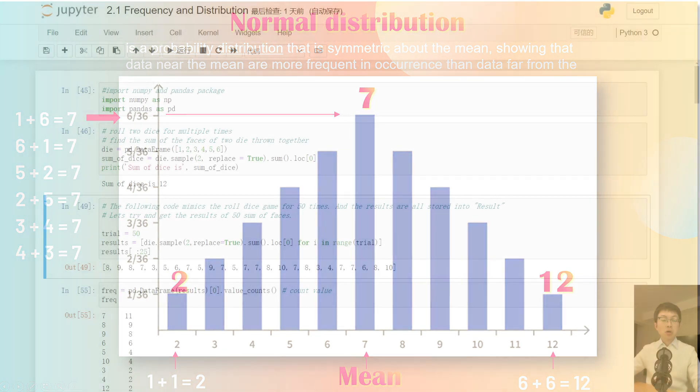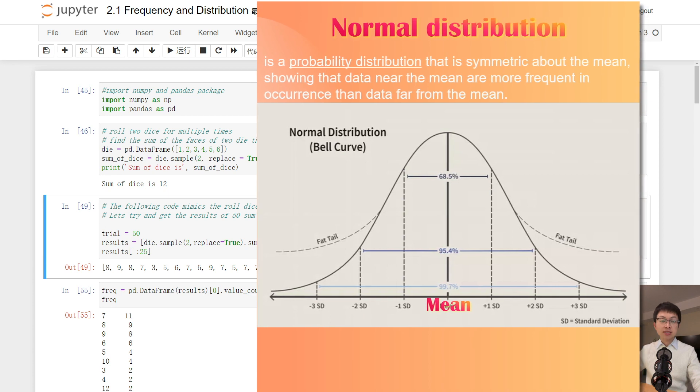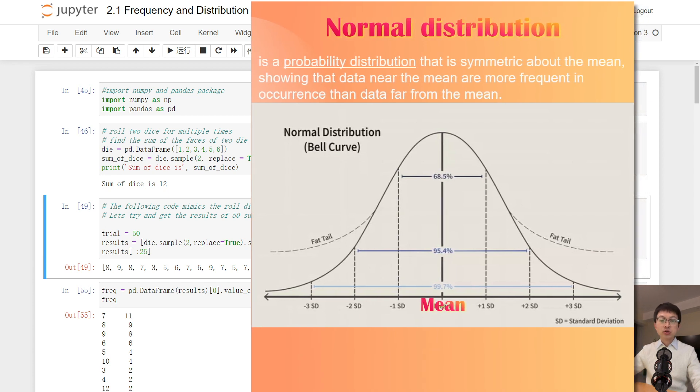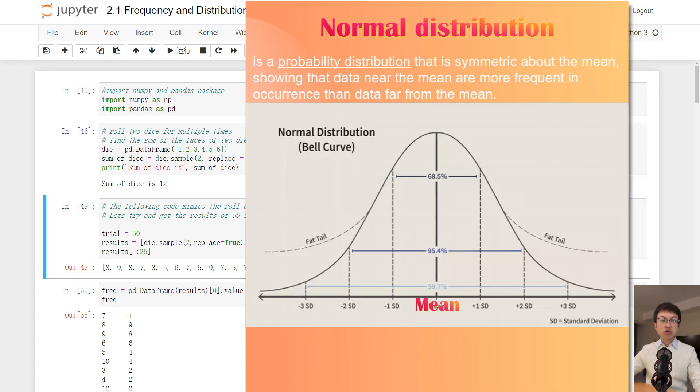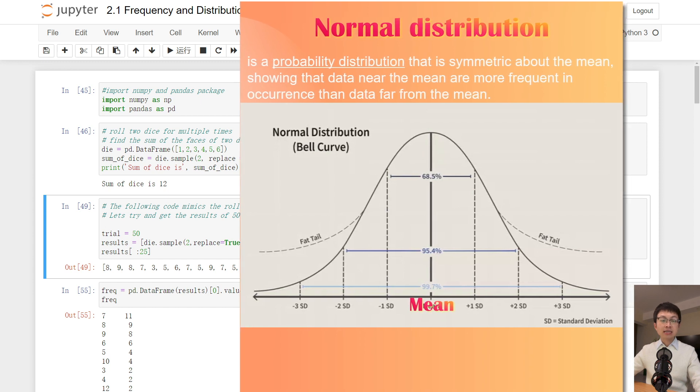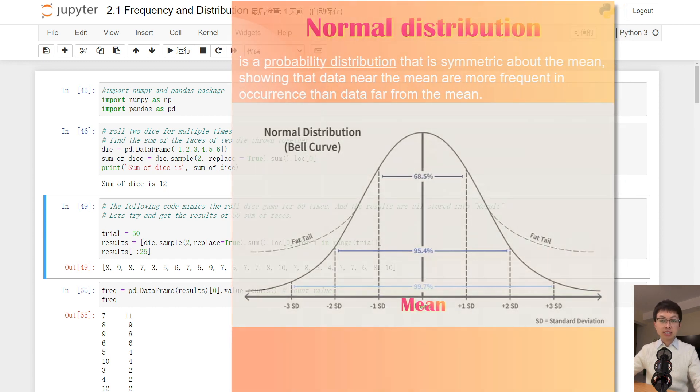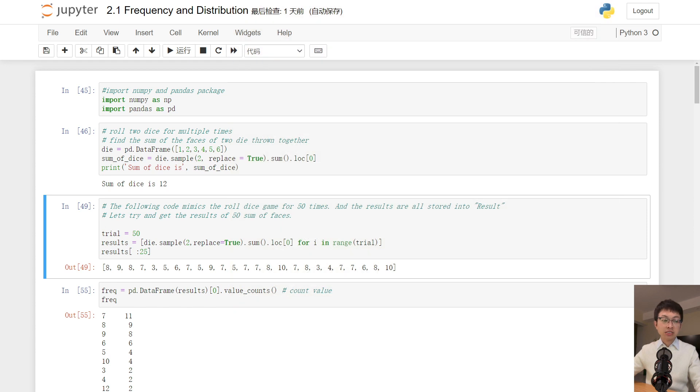So here I'm going to introduce the concept of normal distribution. Normal distribution is a probability distribution that is symmetric about the mean, showing that data near the mean are more frequent in occurrence than data far from the mean.